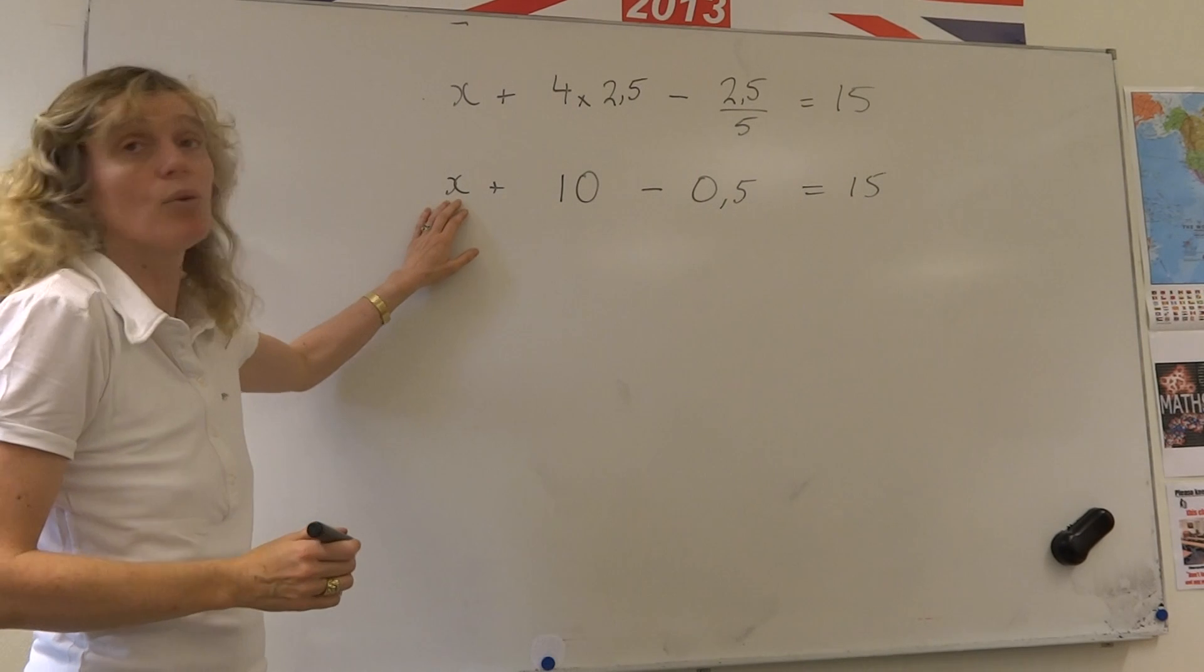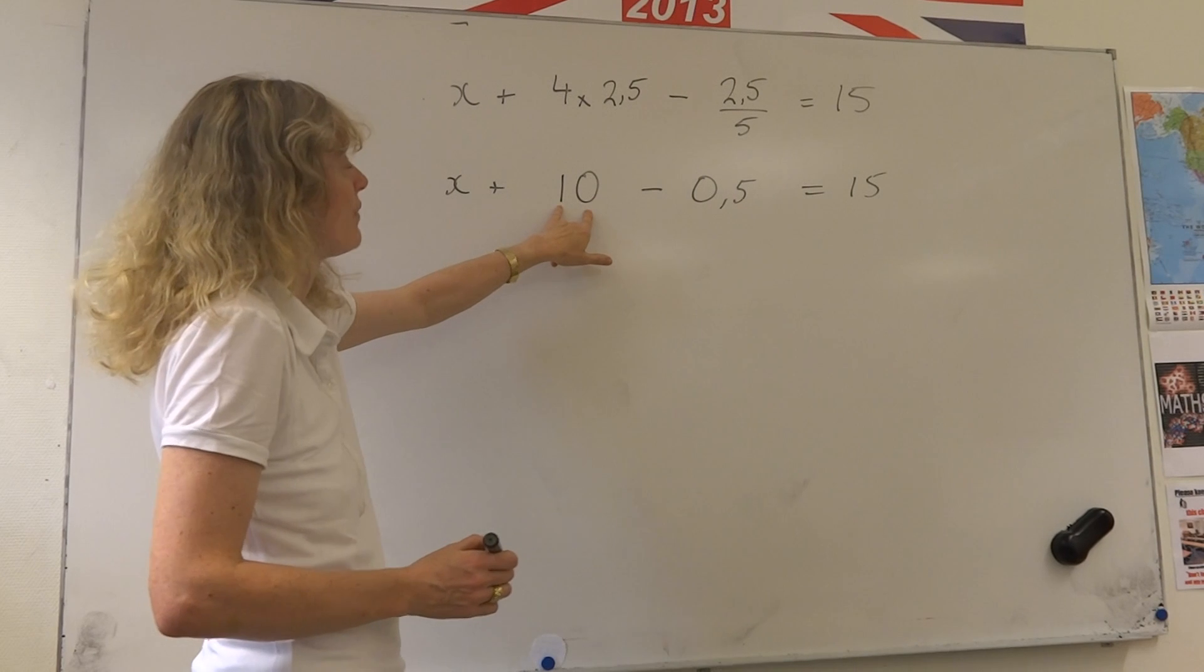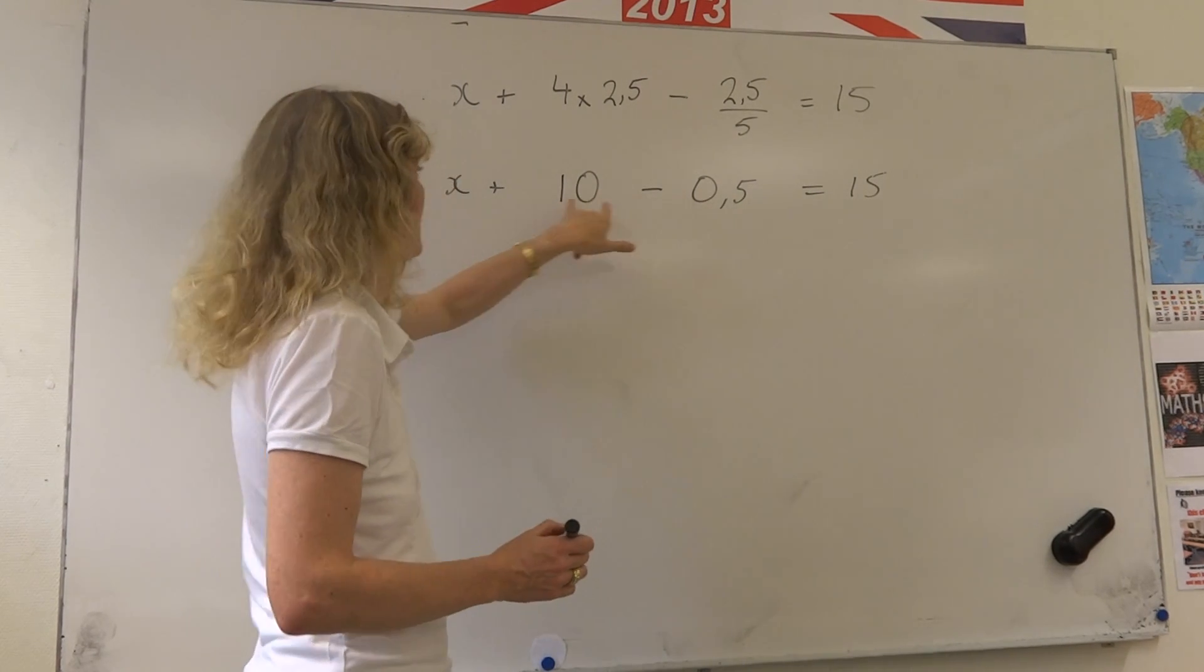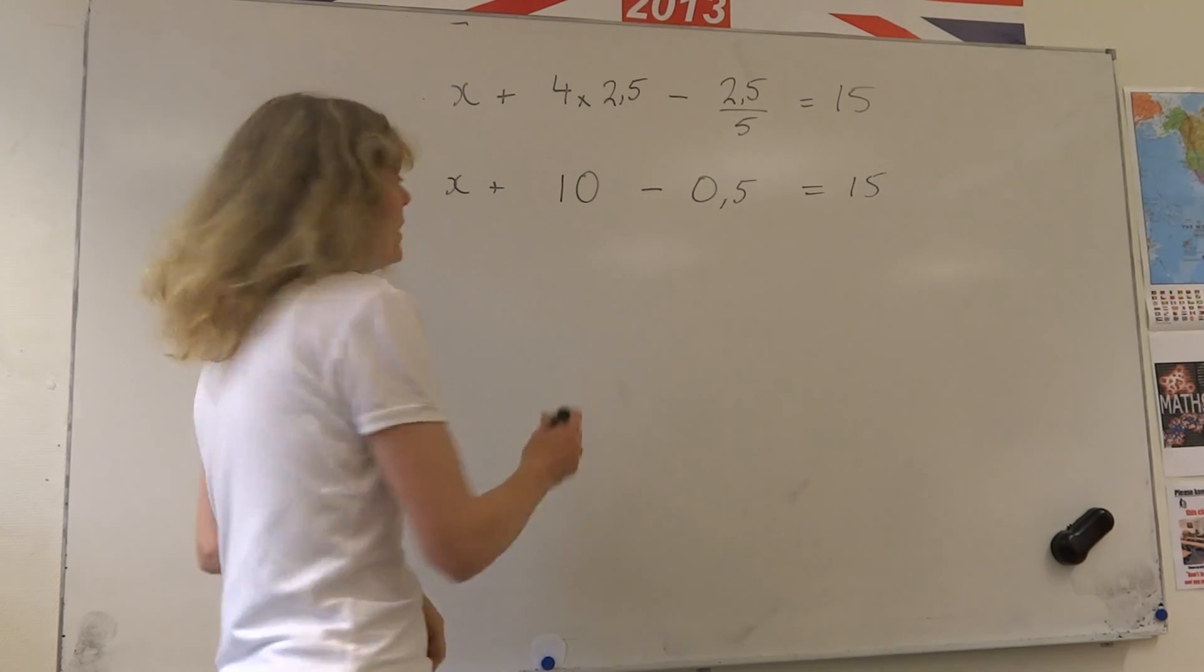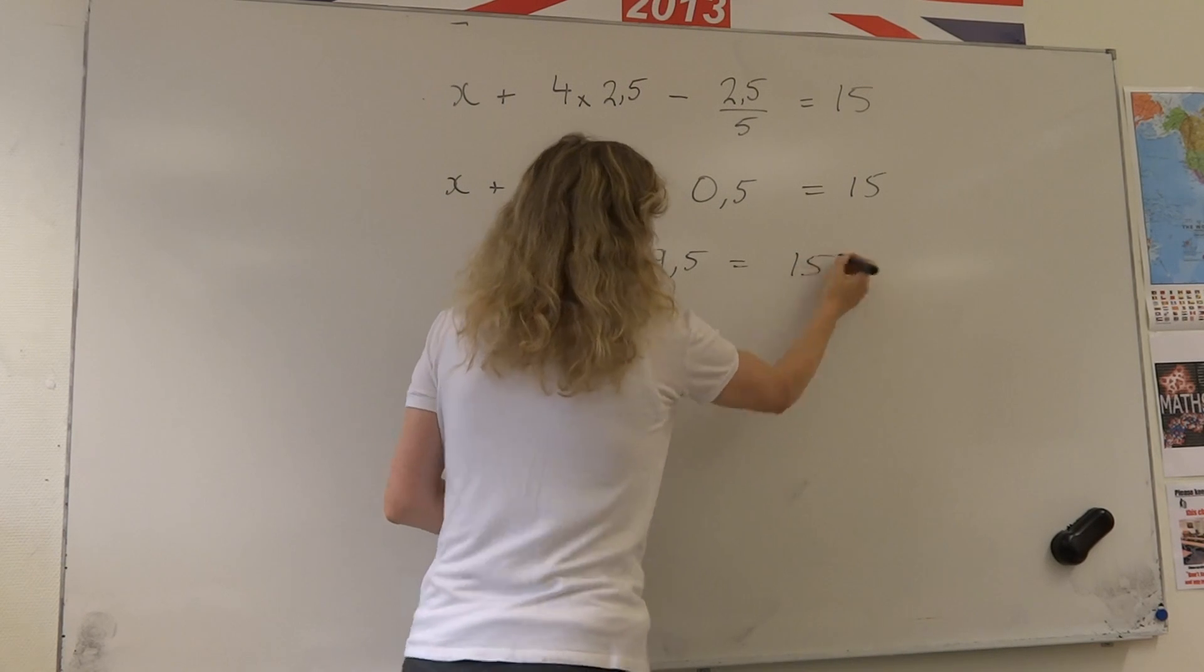Now I want to get rid of all the numbers and work out what x is. So if I was going to get rid of this plus 10, I'd have to do minus 10 from both sides. Or I can actually work out this first. 10 minus a half is 9 and a half. So I get x plus 9 and a half equals 15.